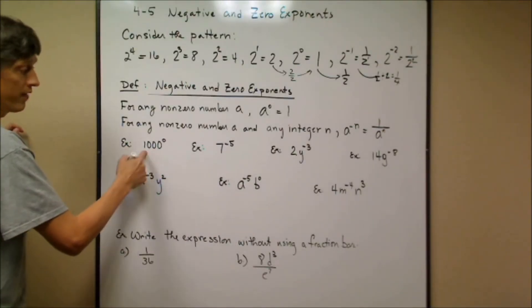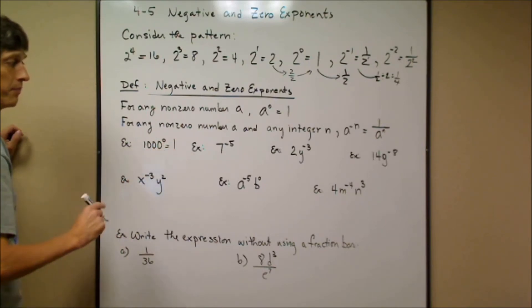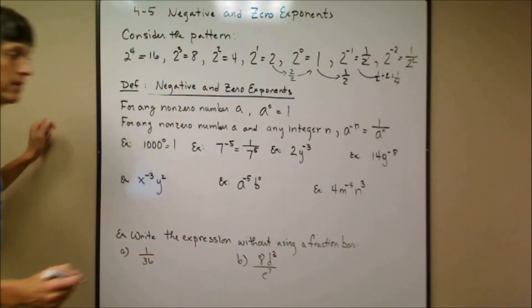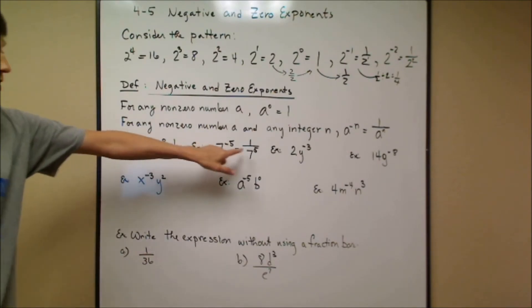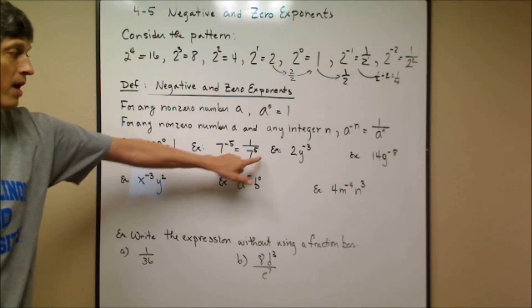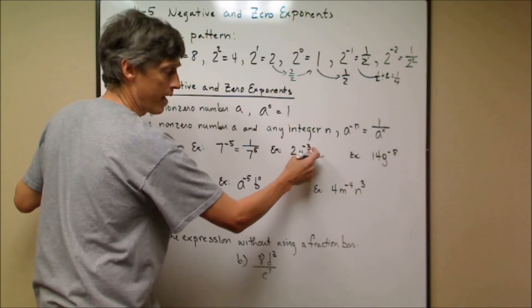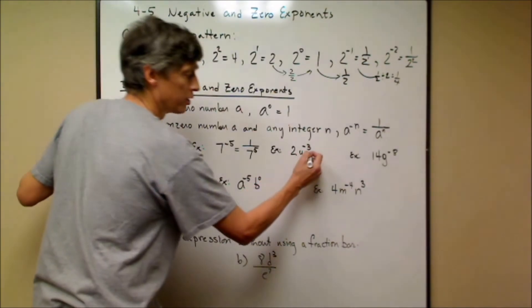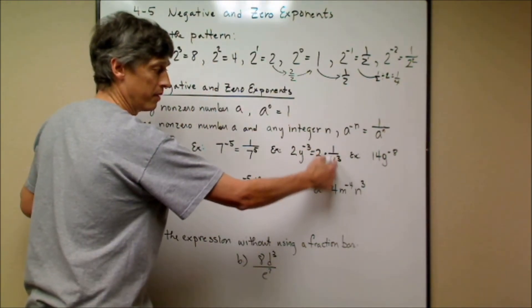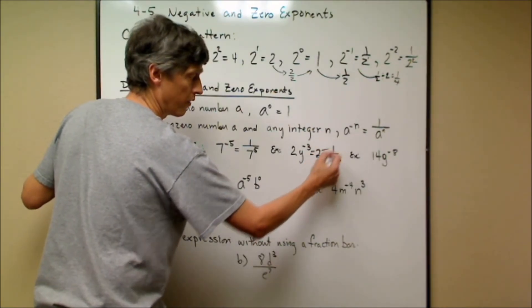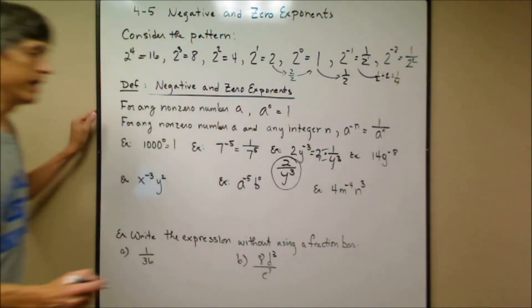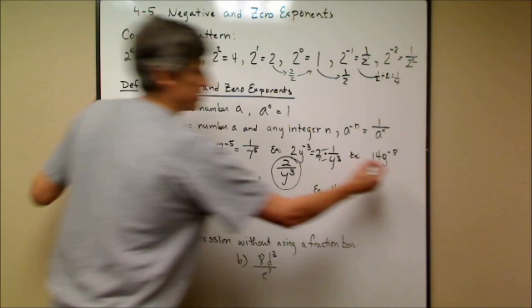For these examples: anything to the zero power is just 1. But 7 to the negative 5 means 1 over 7 to the positive 5 — the expression is not negative, only the exponent was. For 2y^(−3), only the y has the negative exponent, so this equals 2 times 1 over y^3, which gives us 2 over y cubed.